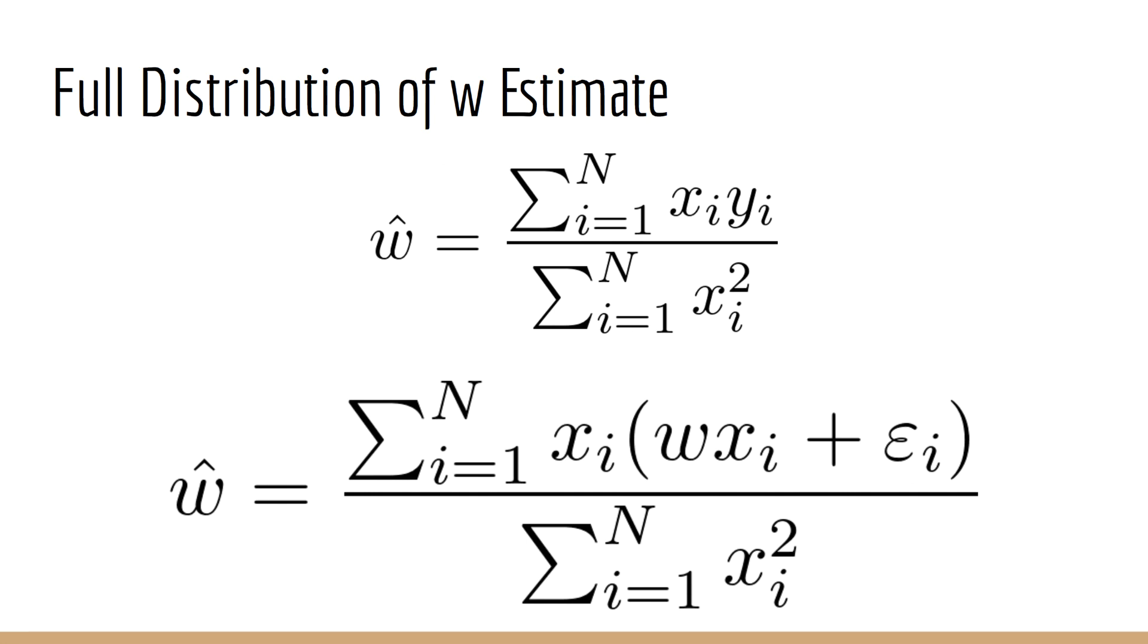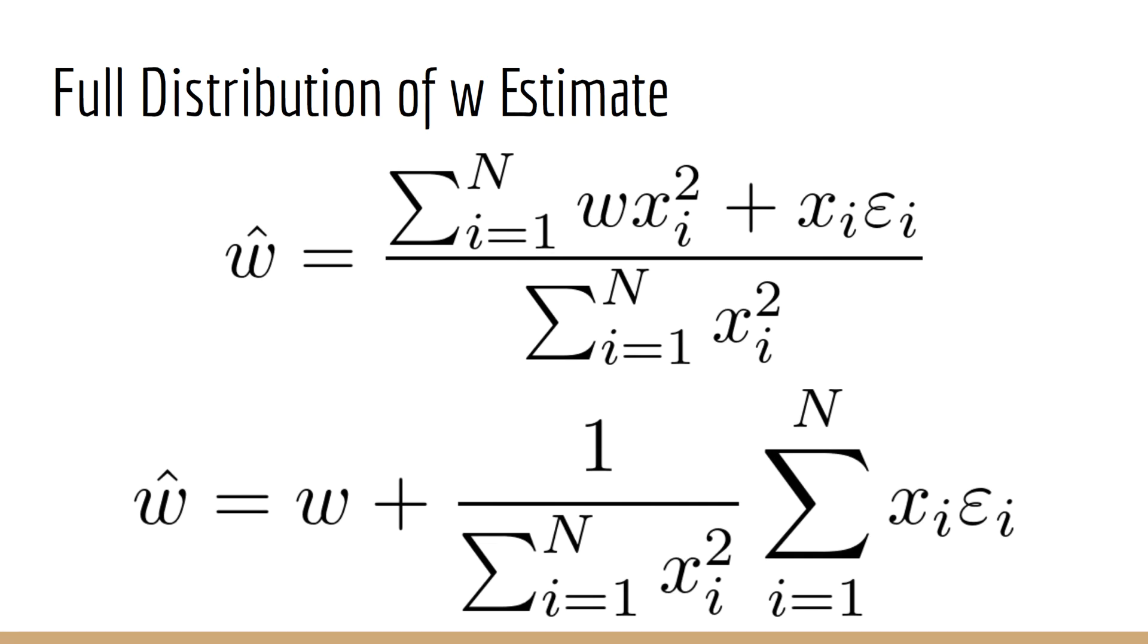To start, we'll plug in our model for y sub i once again, which is w times x sub i plus epsilon sub i. This time, we don't have any expected value, so we just expand the terms. As before, the first term ends up having the sum of x sub i squared over the sum of x sub i squared, which is 1, so the first term is just w.